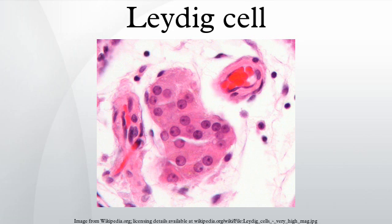Besides the obvious abundance of smooth endoplasmic reticulum with scattered patches of rough endoplasmic reticulum, several mitochondria are also prominent within the cytoplasm. Frequently, lipofuscin pigment and rod-shaped crystal-like structures 3 to 20 micrometers in diameter are found.